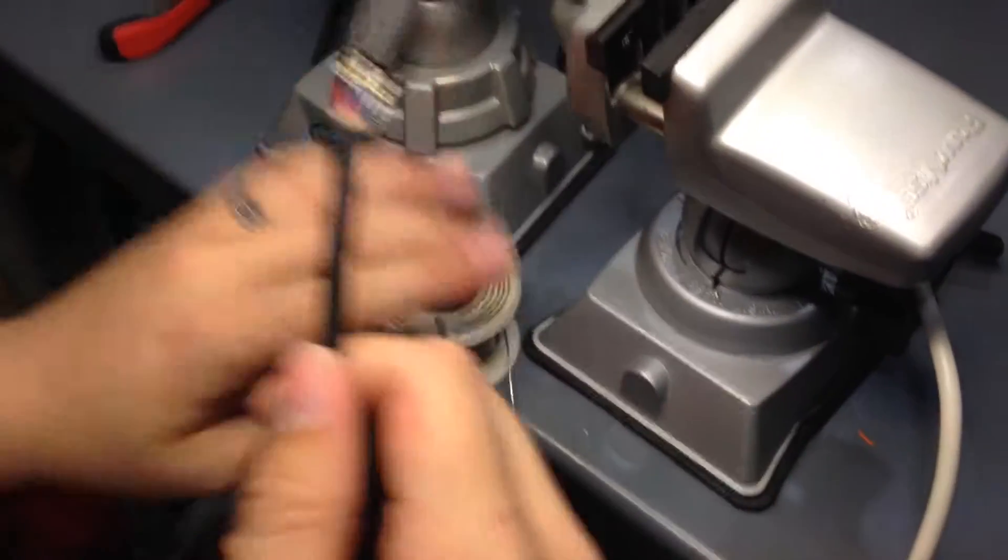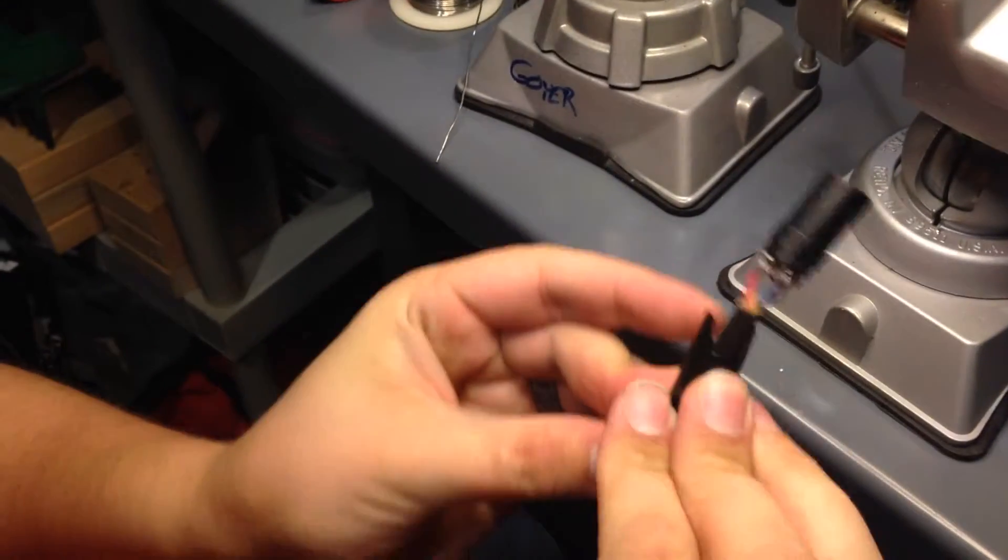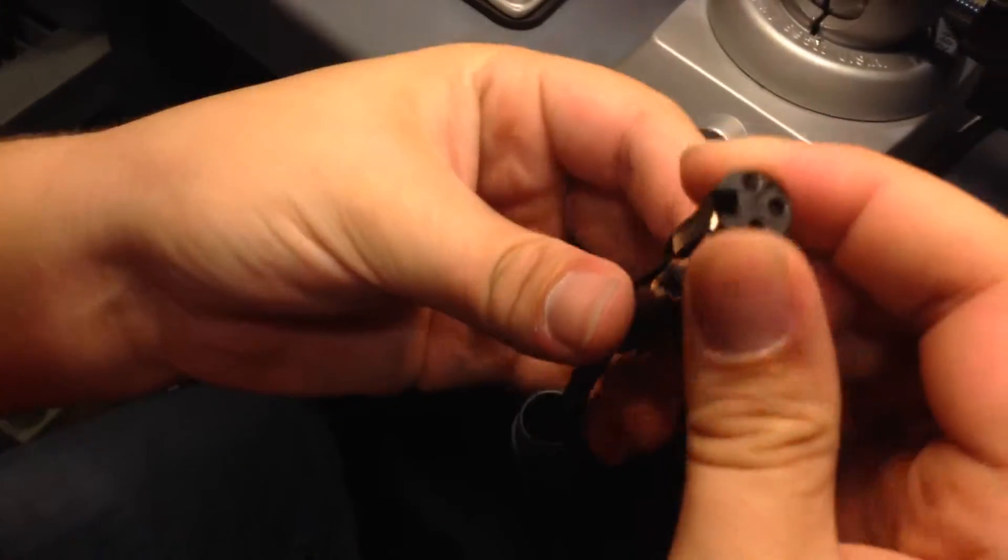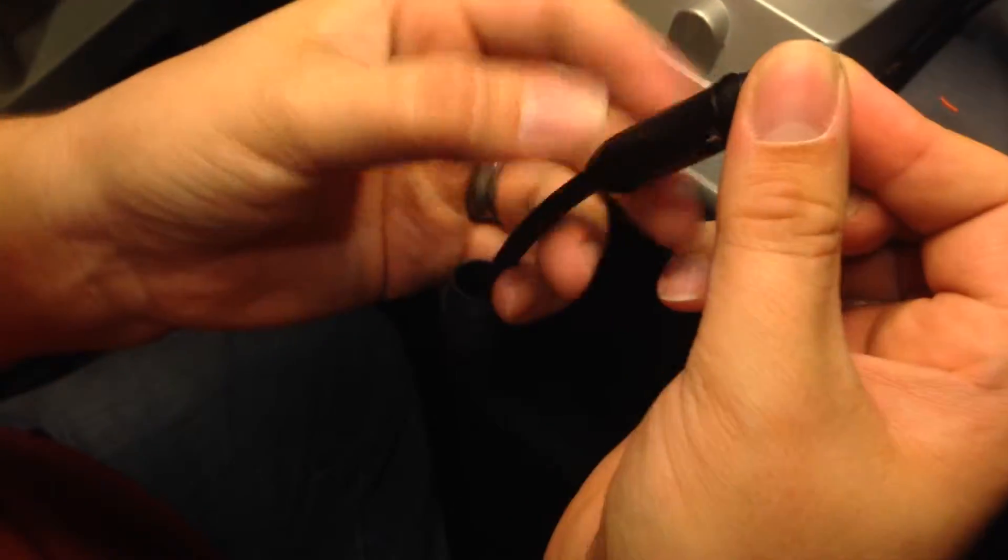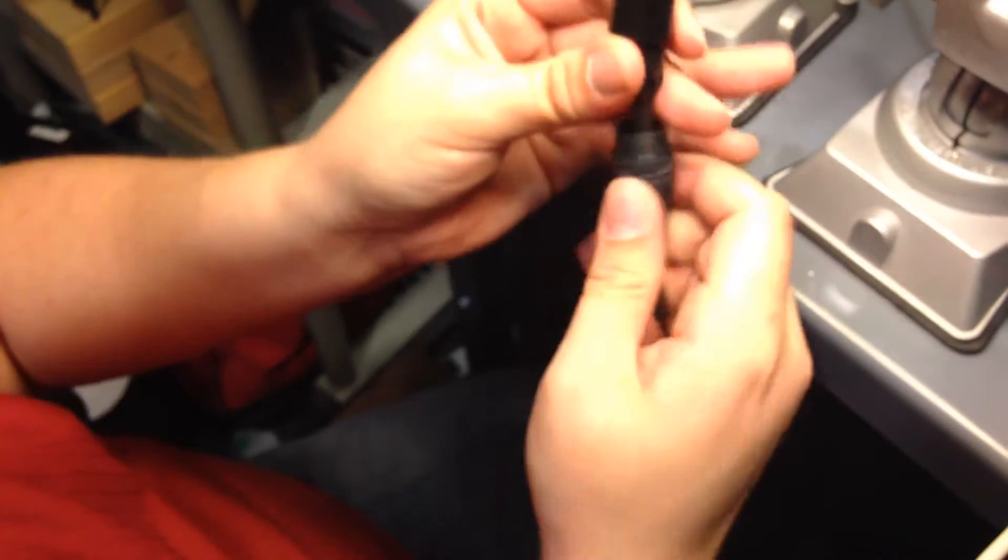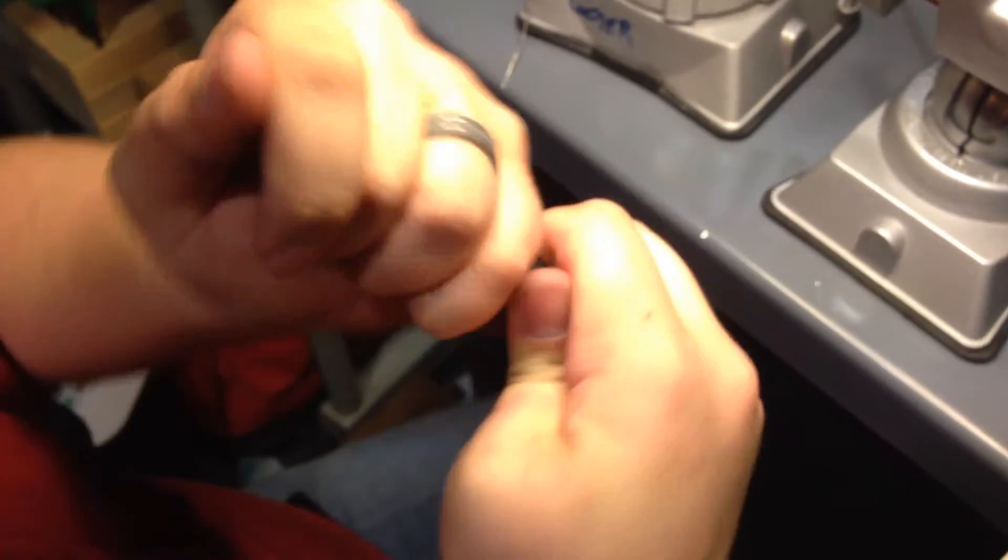So now, again, we just take the shield... the... or the stress release... relief is what that's called. And again, it fits just there. Put that in. And screw the boot on. Cool. Now, we have two ends.